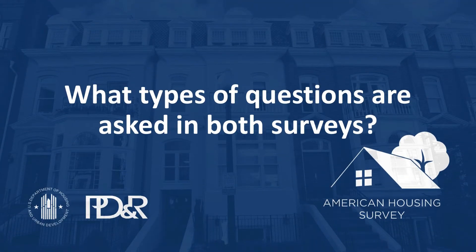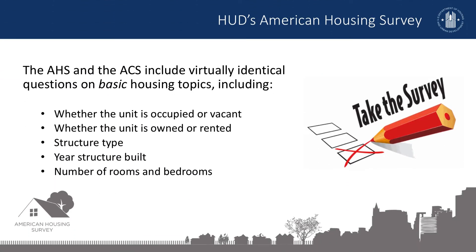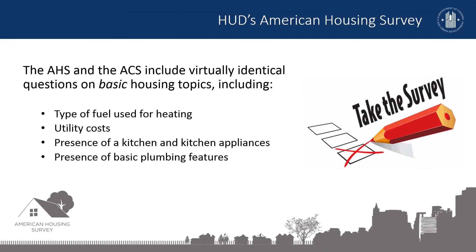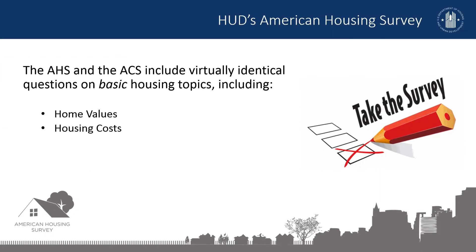Users will find many similarities in the types of questions asked in both the AHS and the ACS. The AHS and the ACS include virtually identical questions on basic housing topics, including whether the unit is occupied or vacant, whether the unit is owned or rented, the type of structure such as a single-family home or an apartment unit, the year the structure was built, and the number of rooms and bedrooms. The AHS and the ACS also include virtually identical questions on the type of fuel used for heating, utility costs, the presence of a kitchen and kitchen appliances, and the presence of basic plumbing features such as toilets, sinks, a shower or tub, and hot and cold running water. Both surveys include the same kinds of questions on home values and housing costs, including rent or homeowner costs such as mortgage, property taxes, and insurance.